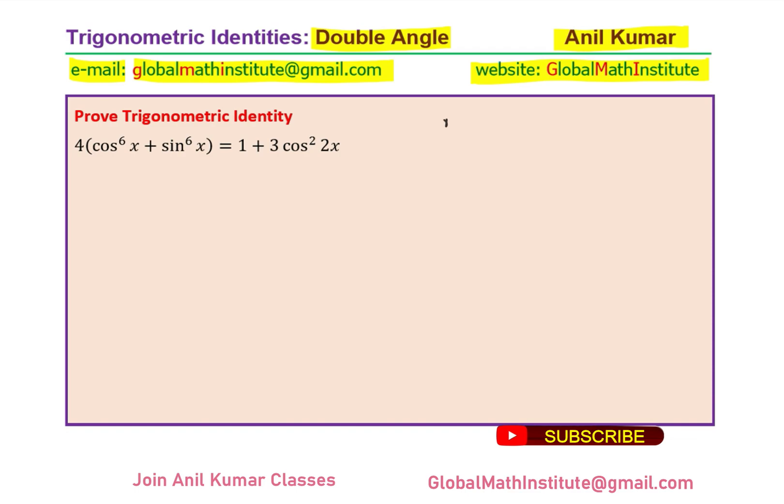One of them is cos of 2 theta. Cos of 2 theta can be written in many different ways: 2 cos square theta minus 1, or 1 minus 2 sin square theta helps us to prove such identities.